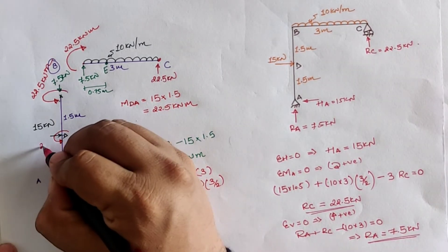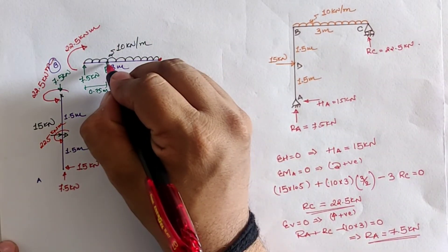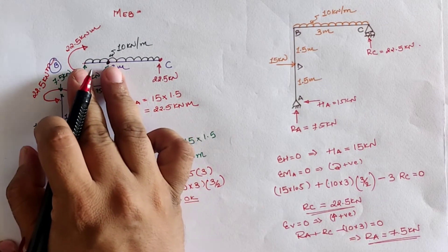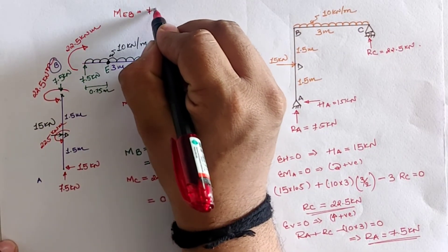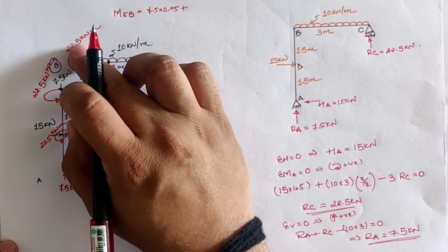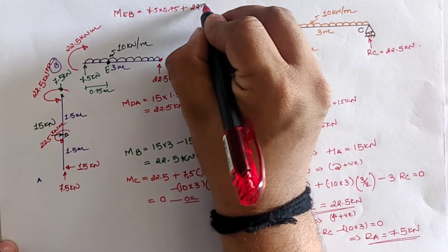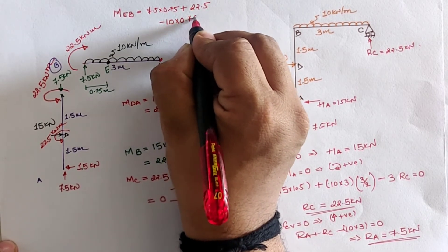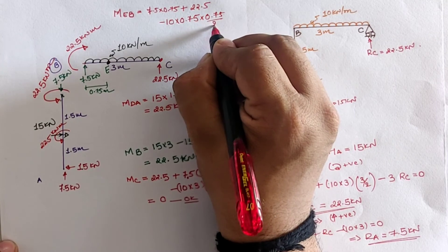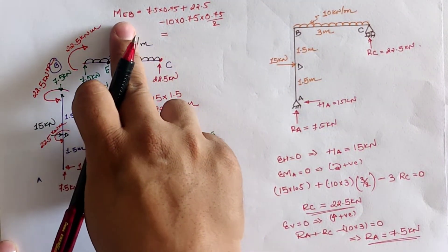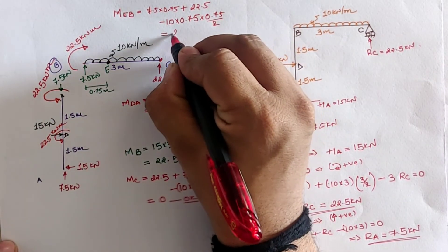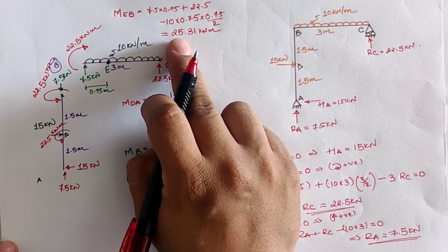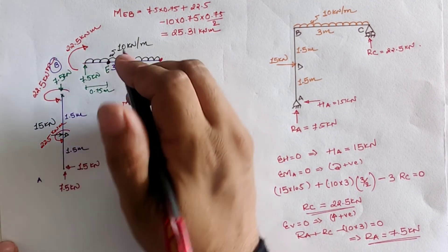Taking moment at location E (0.75 m from B) in the direction of B: 7.5 × 0.75 (clockwise) + 22.5 (clockwise from B) − 10 × 0.75 × 0.75/2 (anticlockwise UDL) = 5.625 + 22.5 − 2.8125 = 25.31 kilonewton·meter clockwise. An anticlockwise moment of 25.31 kN·m is applied at E in the direction of B.